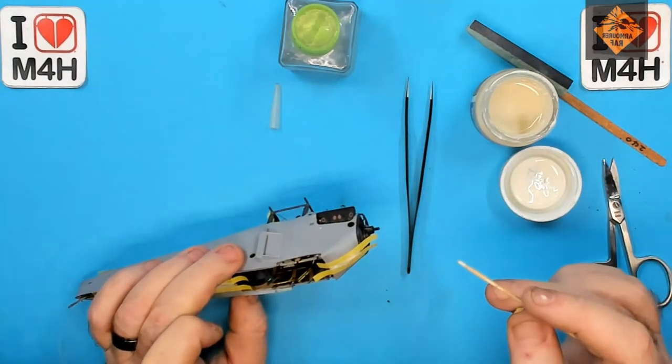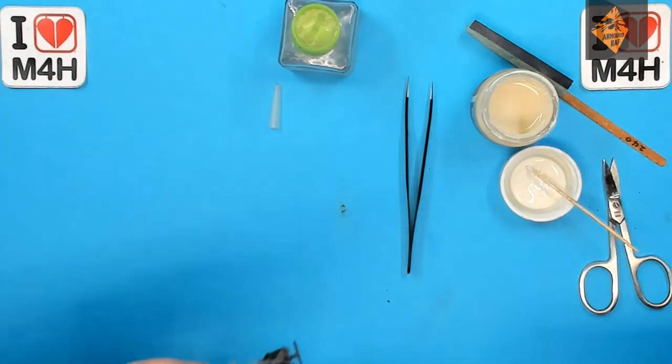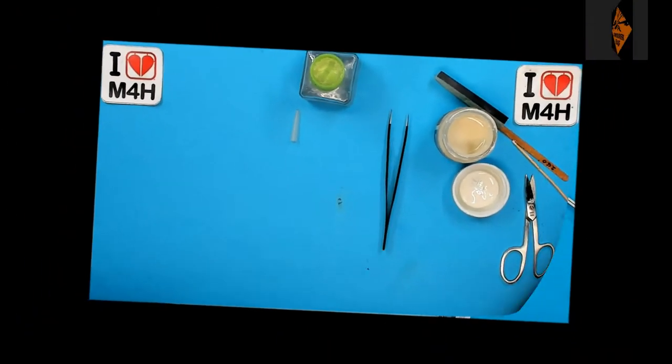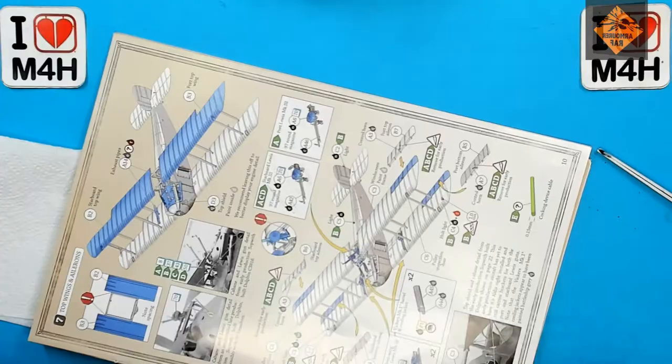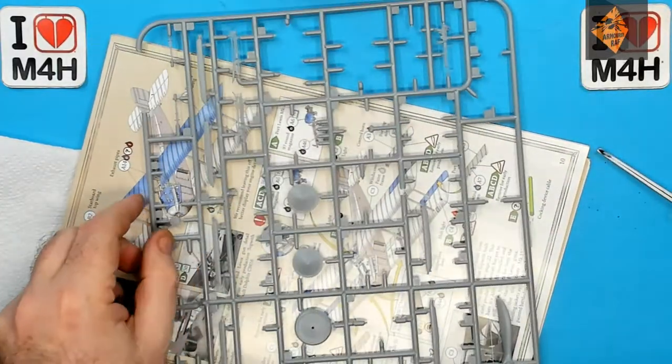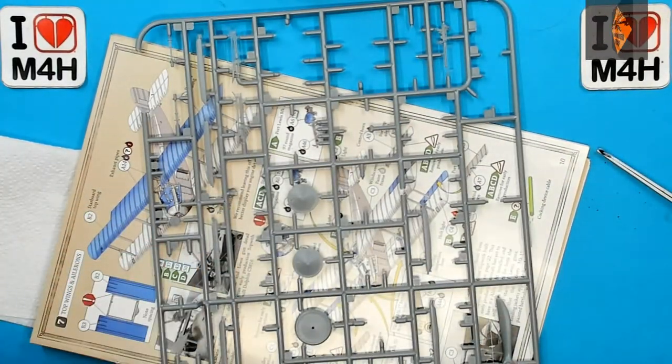There we go, that's done. We'll pop that to one side and let it dry. While that's drying, I'm going to be doing the exhaust. I'm going to take them off the sprue and then drill out the ends so they look better, so let's crack on with that.